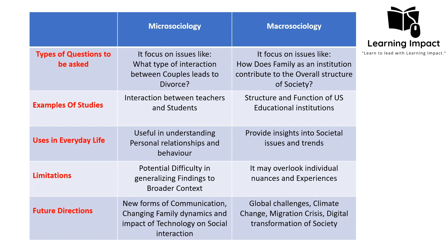Regarding limitations, micro sociology faces potential difficulty in generalizing findings to a broader context, because it studies social interaction at a small scale within a specific societal context. For example, the finding from two friends interacting at a party cannot be generalized to say that everywhere two friends meet they interact in the same manner, since it is tied to specific circumstances and background. The limitation of macro sociology is that it may overlook individual nuanced experiences. When observing from above, it may be unable to provide the detailed analysis that micro sociology gives at the narrow range level.